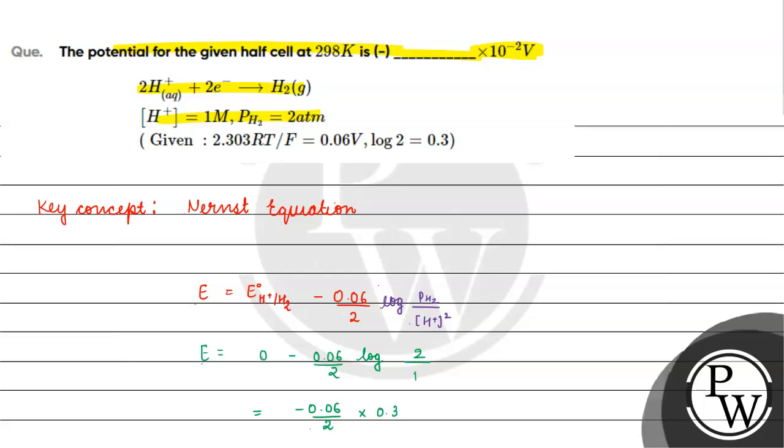This gives us minus 0.06 by 2 into log 2. Log 2 value is 0.3. So we get minus 9 into 10 to the power minus 3 volts. To write this in terms of 10 to the power minus 2, we multiply and divide by 10.